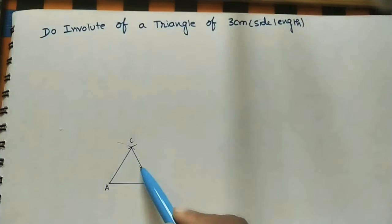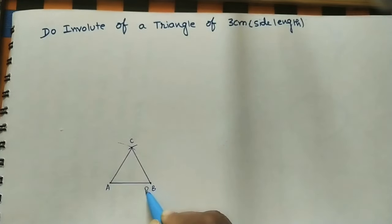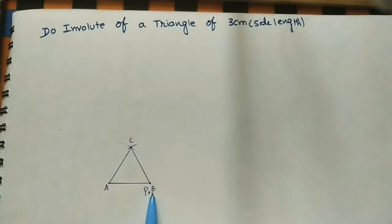Each side is 3cm. Take the initial point at B. From B in this direction, draw a line of some length.